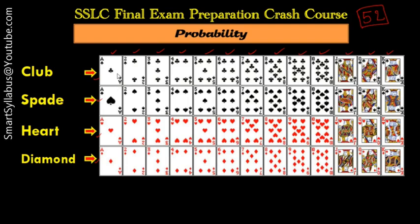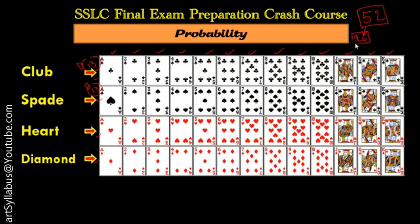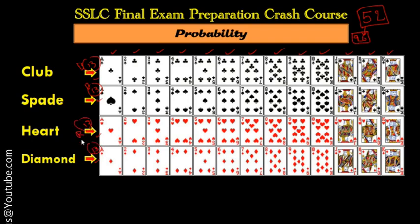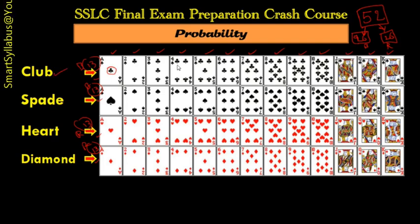Out of those 52 cards, if you categorize them: these thirteen plus thirteen are black color cards — that's 26 black color cards. And these thirteen plus thirteen are red color cards — 26 red color cards. Now for further division: the first 13 cards have a shape called club, so there are 13 club cards.